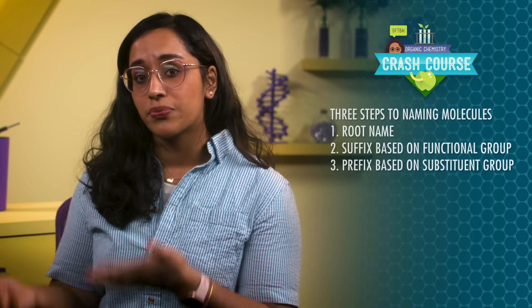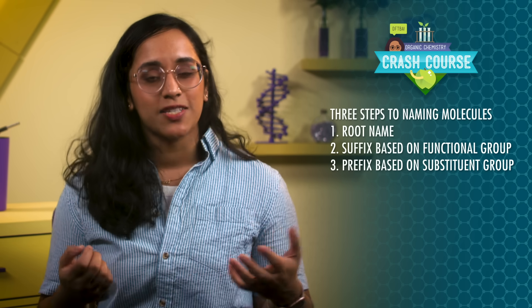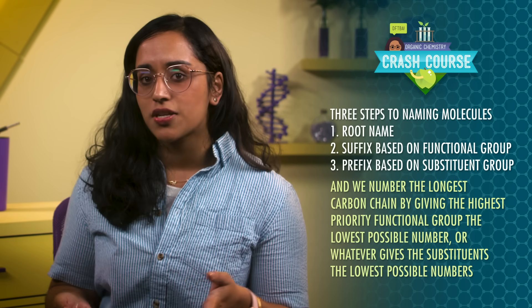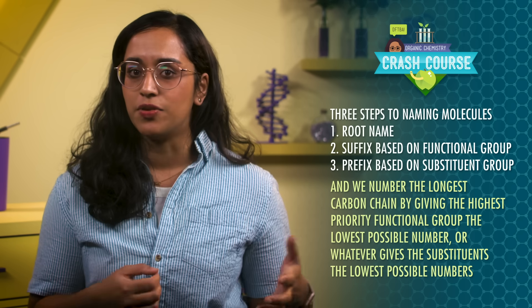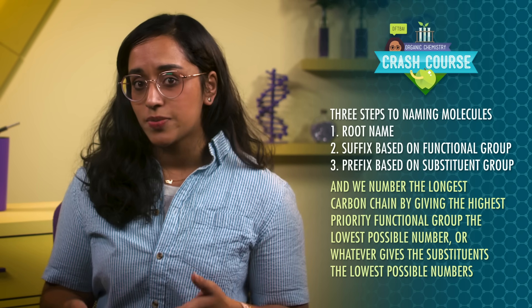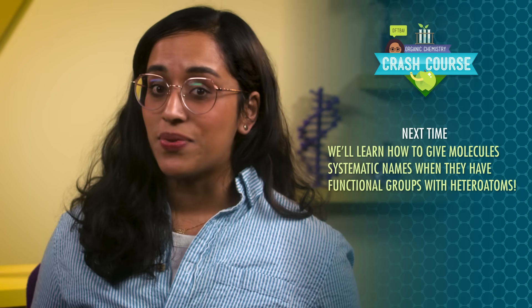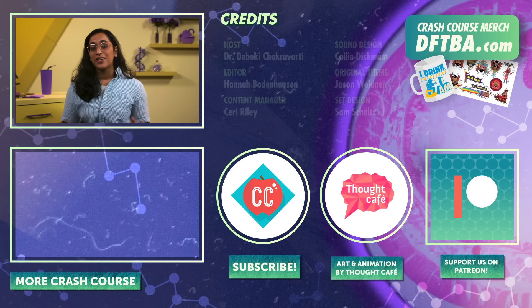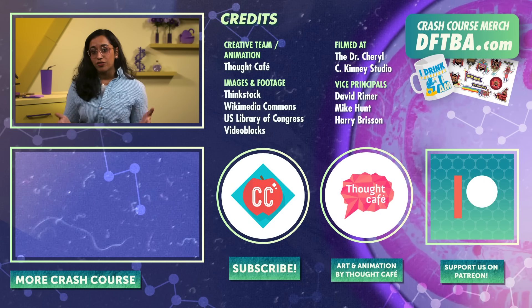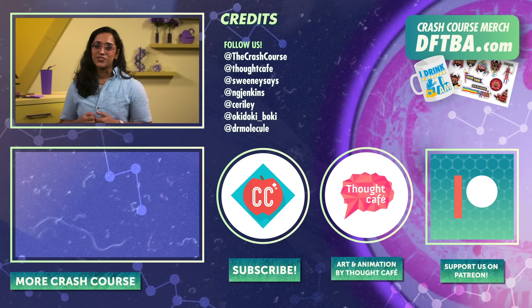In this episode, we learned that there are three steps to naming molecules, which include the root name, a suffix based on functional groups, and a prefix based on substituents. We number the longest carbon chain by giving the highest priority functional group the lowest possible number, or whatever gives substituents the lowest possible numbers. Next time, we'll learn how to give molecules systematic names when they have functional groups with heteroatoms. Thanks for watching this episode of Crash Course Organic Chemistry. If you want to help keep all Crash Course free for everybody, forever, you can join our community on Patreon.